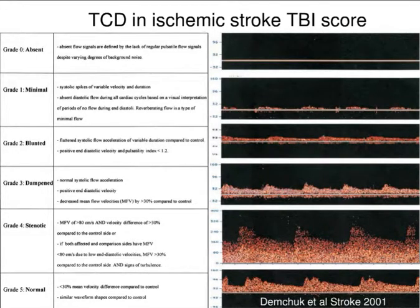There are lots of things you can use transcranial Doppler for. I want to give you an idea of the landscape of what you can use it for, because it is a powerful tool that can be used intermittently in an ICU patient. One example is using transcranial Doppler to reassess recirculation after acute ischemic stroke.